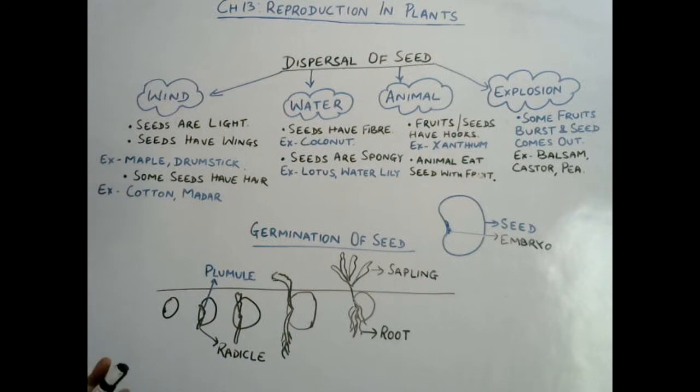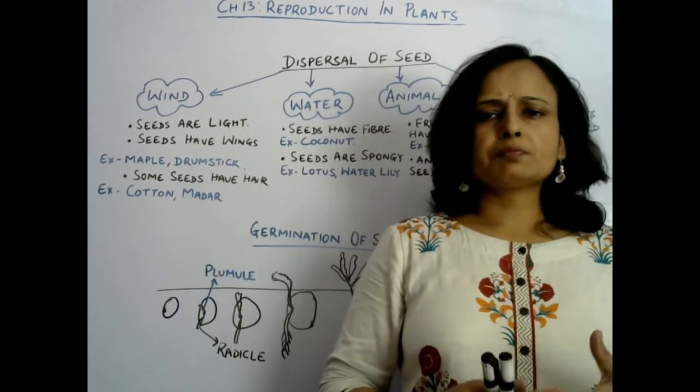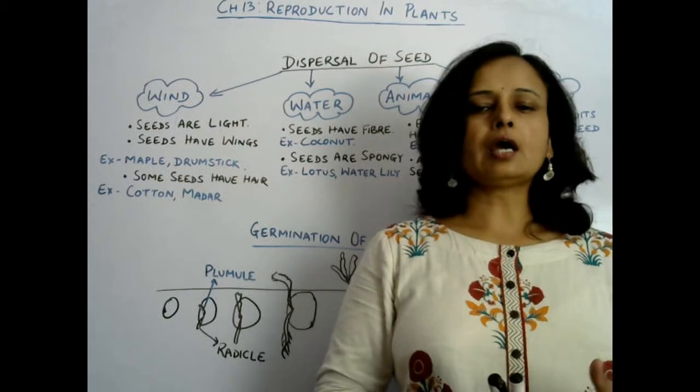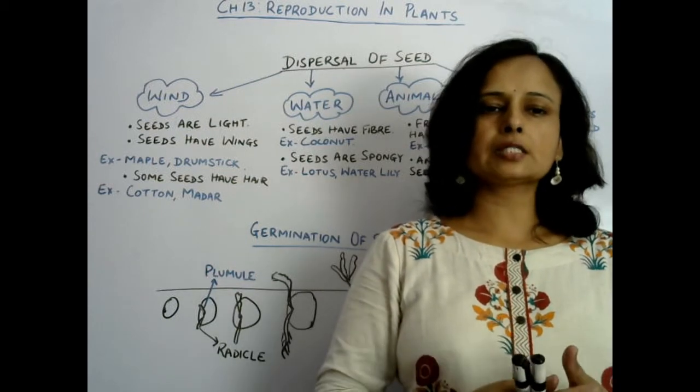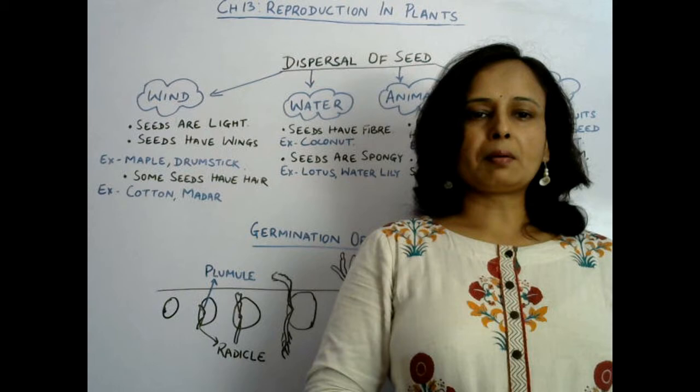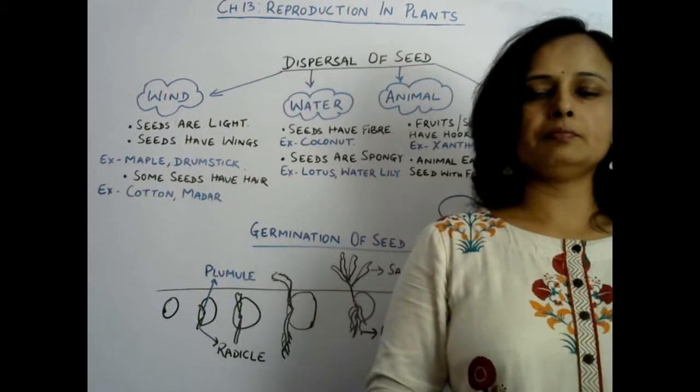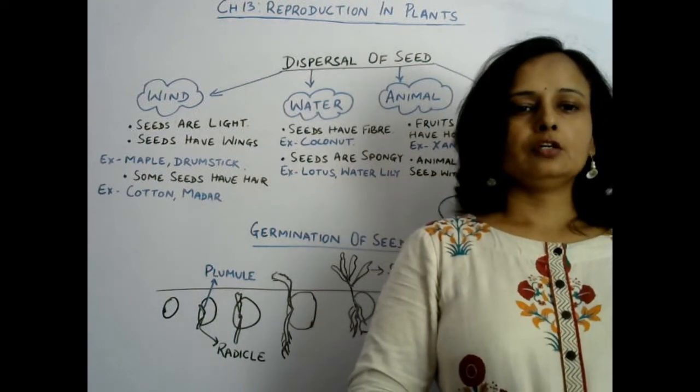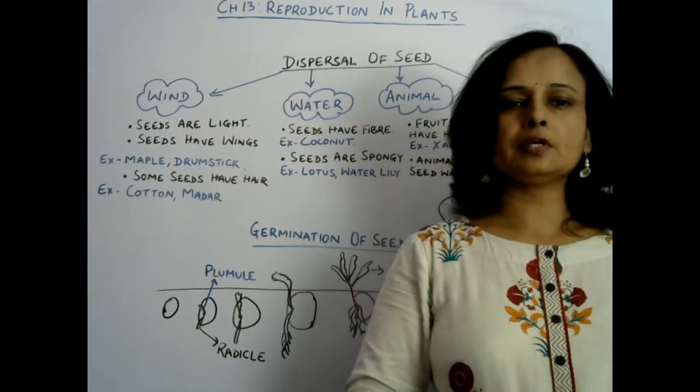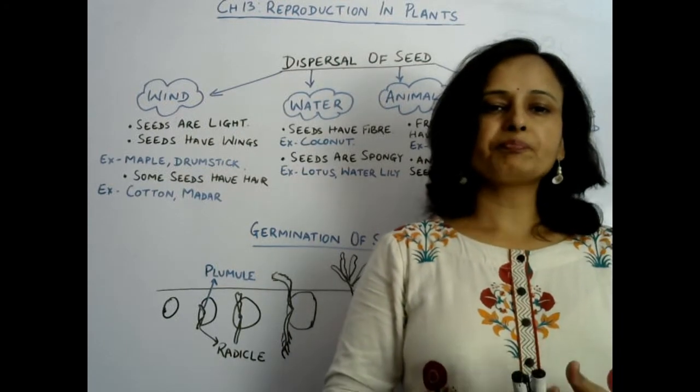Seeds are dispersed through natural means only. These are wind, water, animal, and explosion. The seeds which are dispersed through wind are light in weight and many seeds have wings. Through wings, they can be carried easily along with wind, like maple and drumstick seeds. Few seeds have hair that can easily be blown away with wind, like cotton and madar. In this way, along with wind, the seeds are carried to different places where they can grow into new plants.